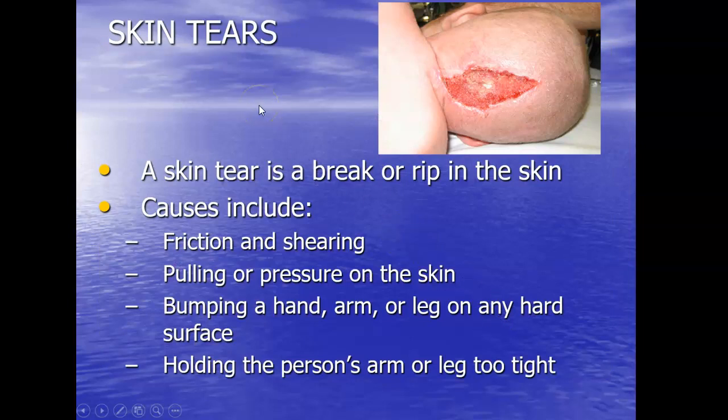A skin tear is a break or rip in the skin usually caused by friction and shearing. Friction is when skin rubs over skin or bony parts of the body rub against each other, and the skin in between can tear open. Shearing is another term used with skin tears — for example, if a patient has been sitting in bed and their back is sweaty and stuck to the sheets, instead of lifting them with a draw sheet, if you drag them up in bed, their skin can stick where it is while you're dragging them and literally tear open.